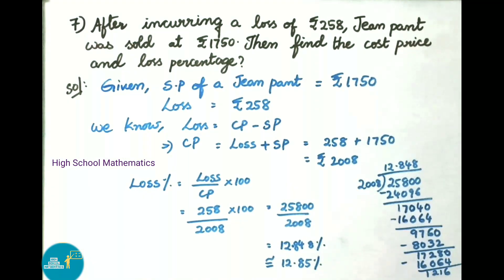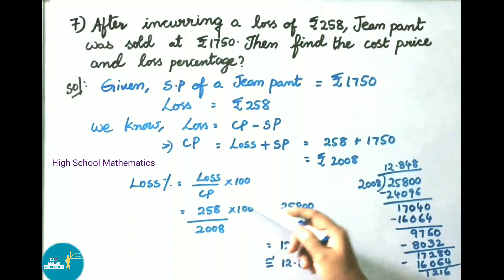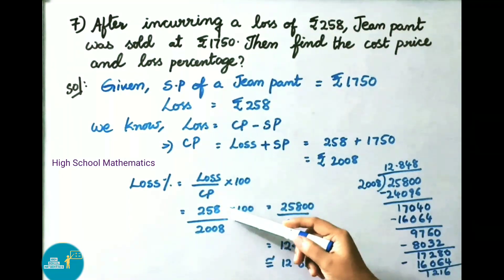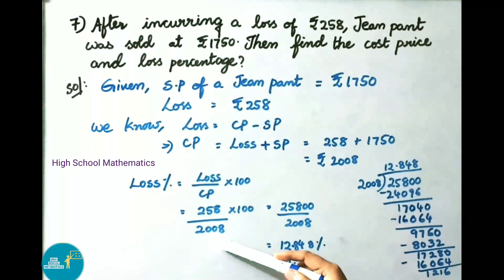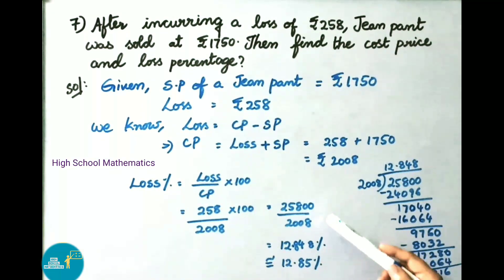They ask us to find loss percentage. Loss percentage equals loss by cost price into 100, that is 258 by 2008 into 100. This equals 25800 divided by 2008. Now let us perform the division.